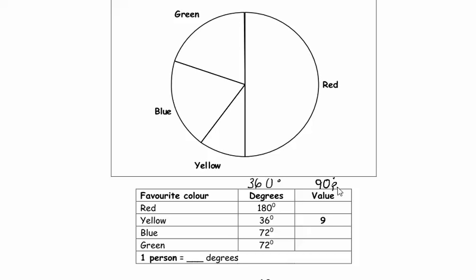So it's 90 people. Value should add up to 90 people; angles should always be out of 360 degrees. So we've got to fit 90 people into 360 degrees. 36 degrees is yellow, so this angle is 36 degrees, and we're told that's 9 people, which we could work out for ourselves. Shall we just check that? If we know the 36 degrees, how could we work out 9 people?